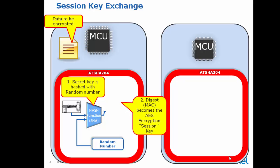The result of a hash, or the digest, of a key and a message is called a MAC, which stands for Message Authentication Code. The MAC here becomes the session key that the MCU will now use to encrypt the data with the AES algorithm. One minor point to note is that the output of the SHA-256 algorithm is 32 bytes long, or 256 bits. Only half of that — 16 bytes — are in fact needed and used by the AES algorithm for encryption and decryption.